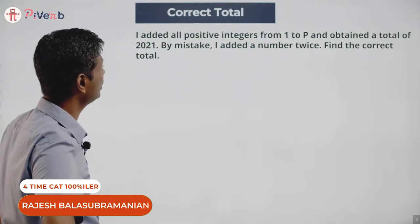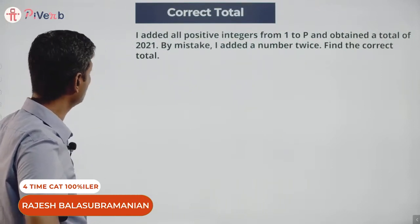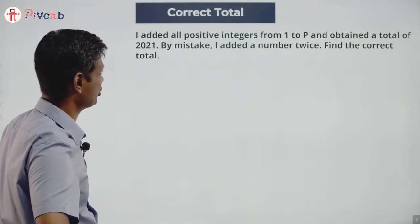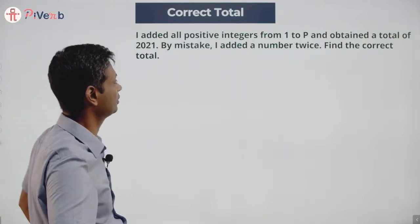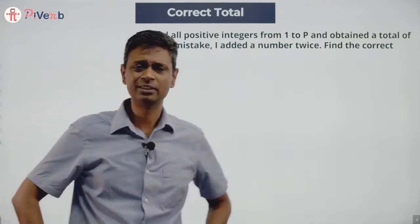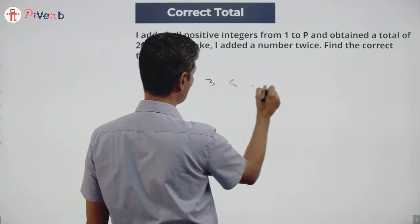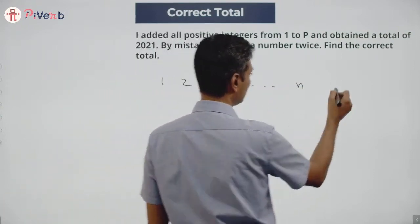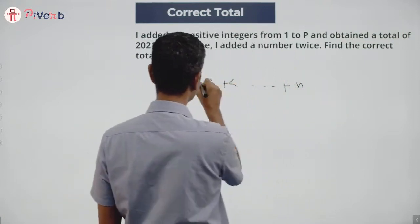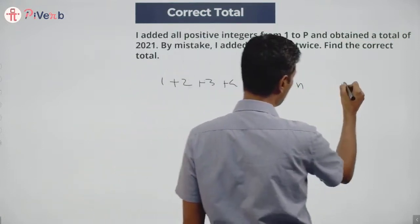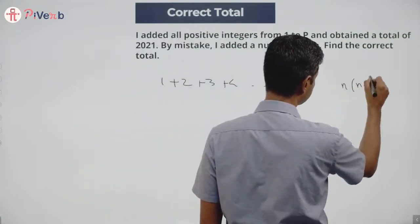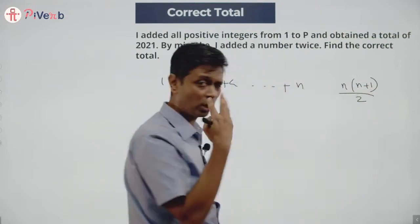I added all positive integers from 1 to p and obtained a total of 2021. By mistake, I added a number twice. Find the correct total. 1, 2, 3, 4... all the way till n. This sum is given by the formula n into n plus 1 by 2.